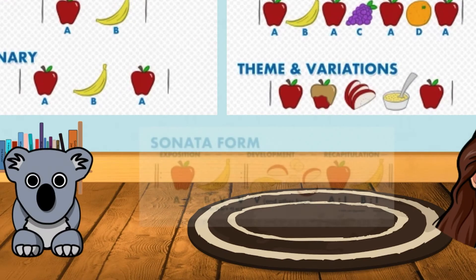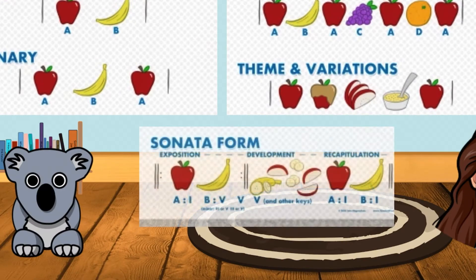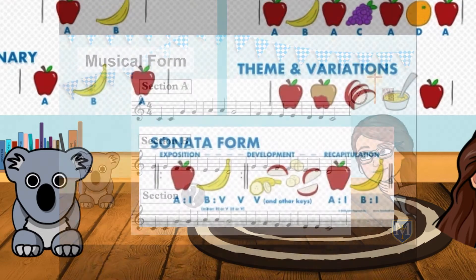The final style of form that we're talking about today is sonata form. This includes parts of the melody, including exposition, development, and finally recapitulation. We'll talk more about these final three forms when you're in third, fourth, and fifth grade. Let's focus on binary and ternary forms.